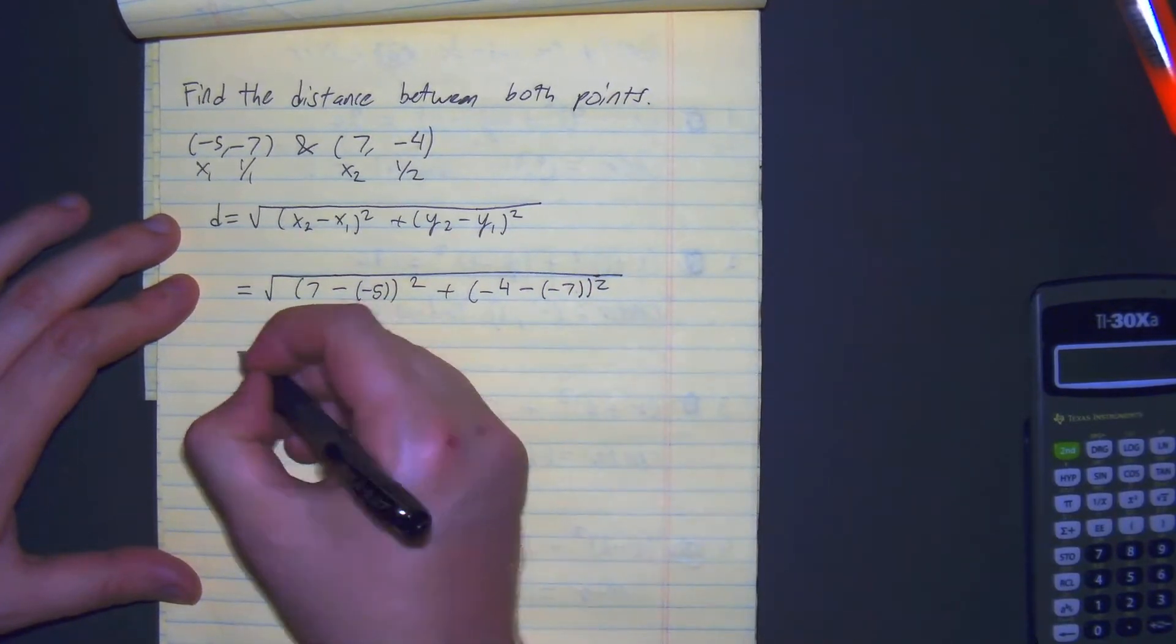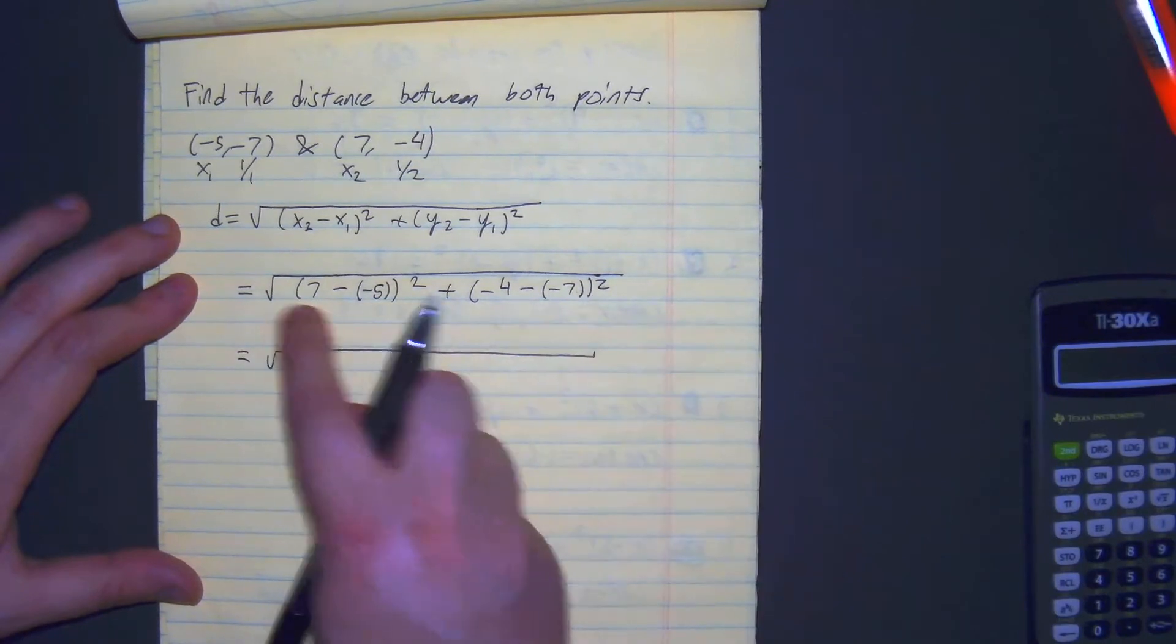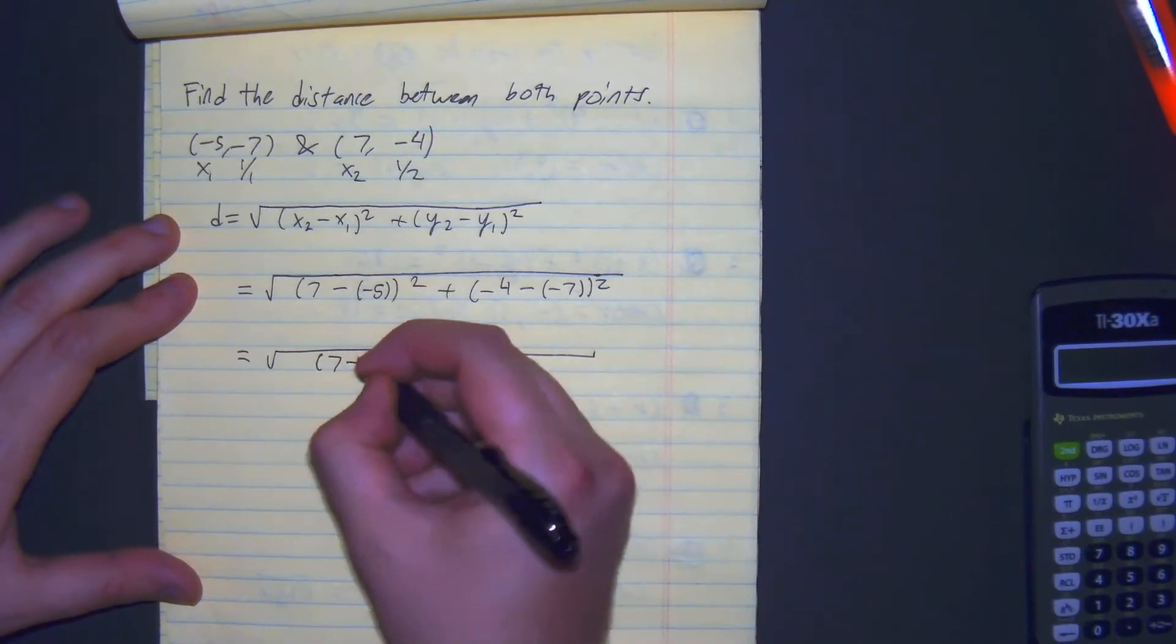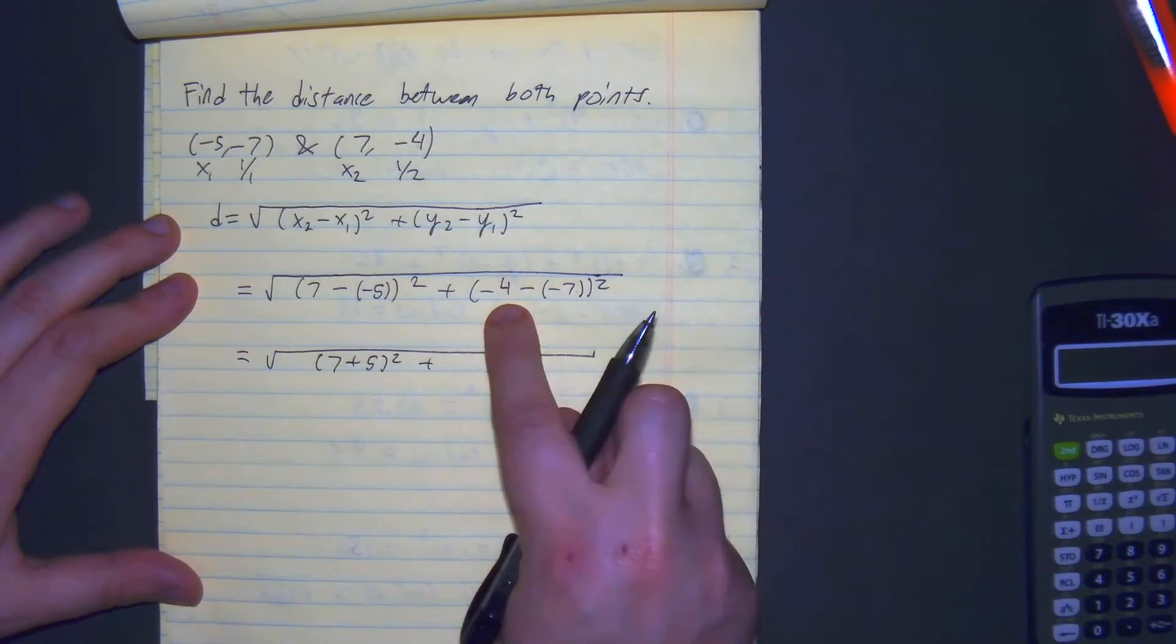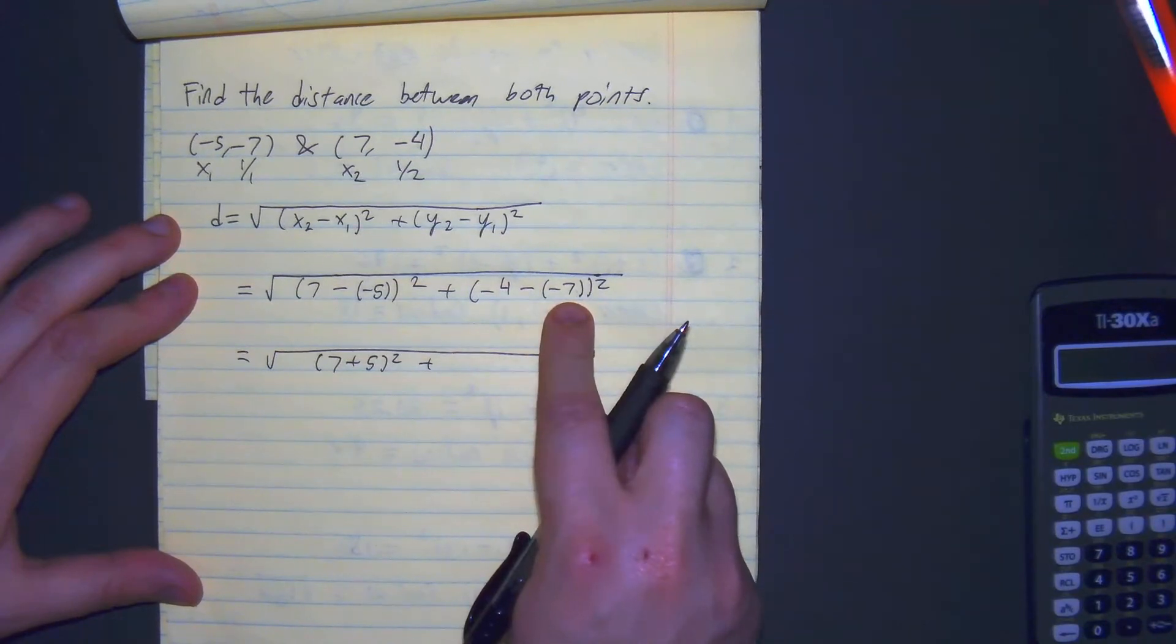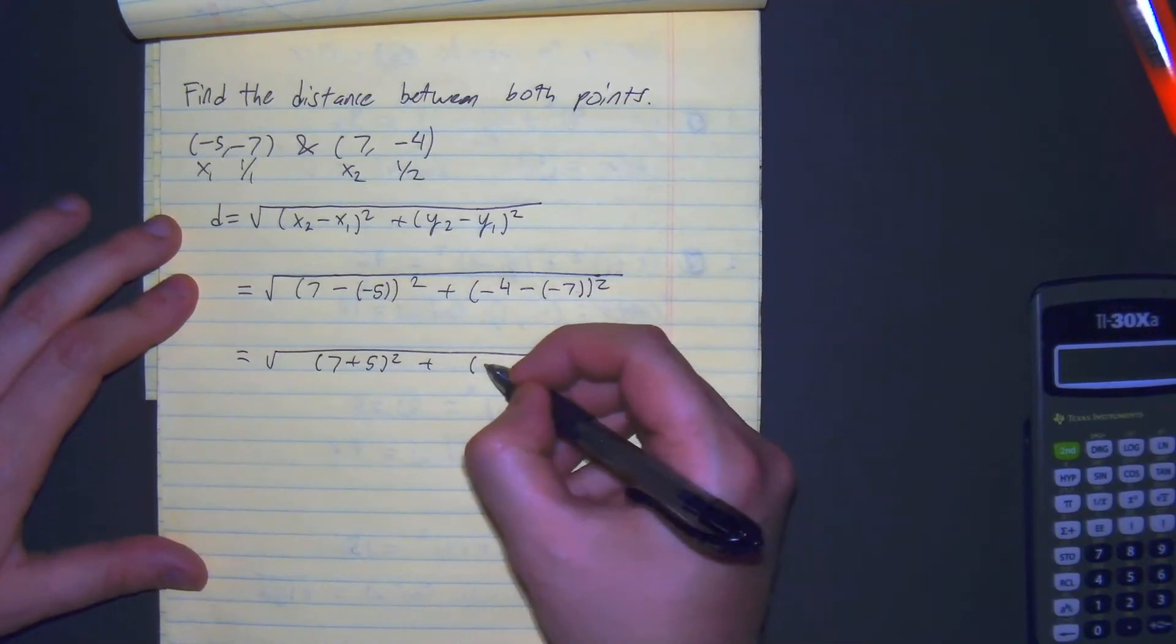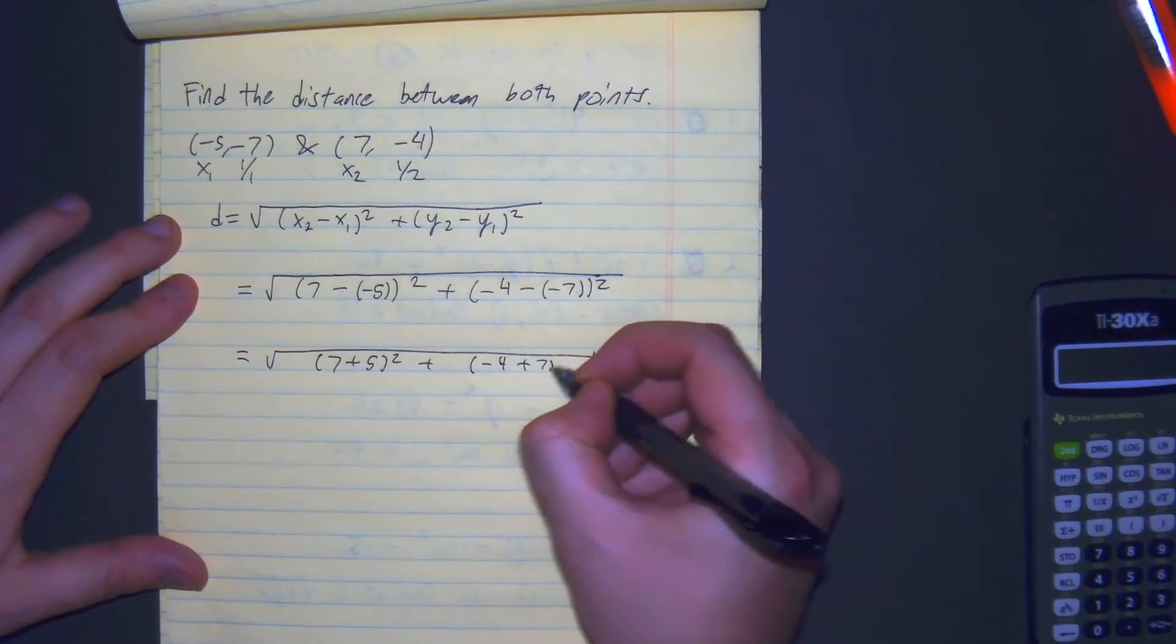So from here, this is equal to the square root of 7 plus 5, negative 4 plus 7 squared.